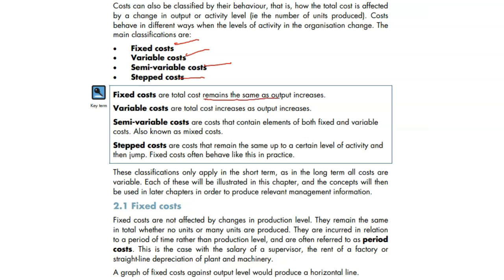Fixed cost remains the same whatever is the output level. Output means your final products. Whether you produce one item or 100 items, your fixed cost will remain fixed.